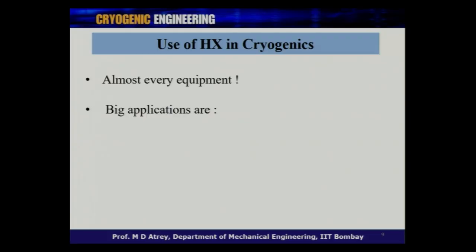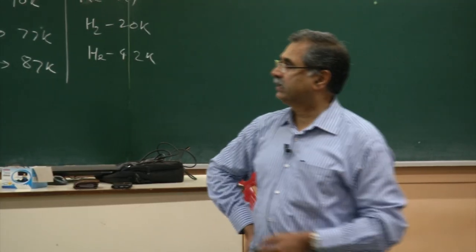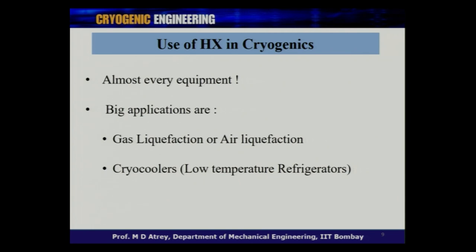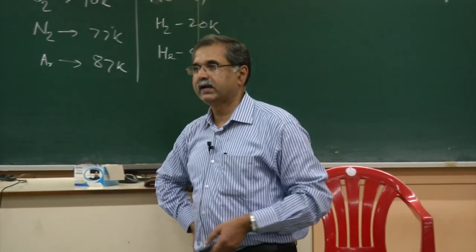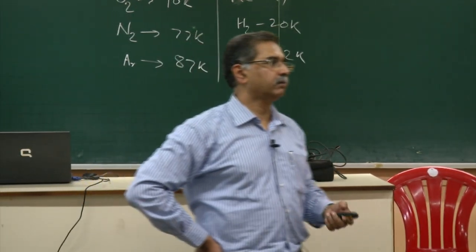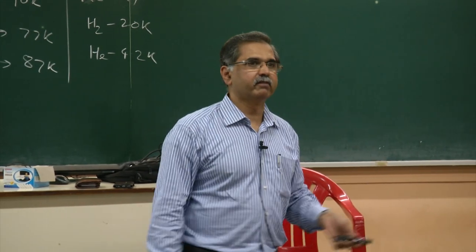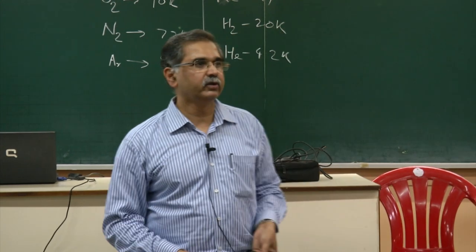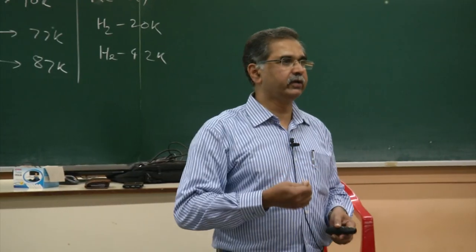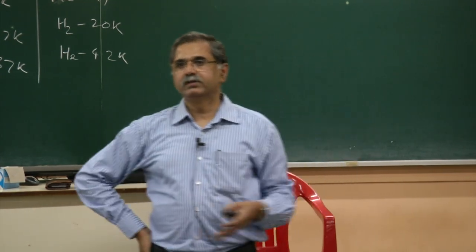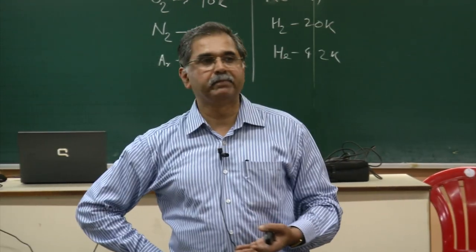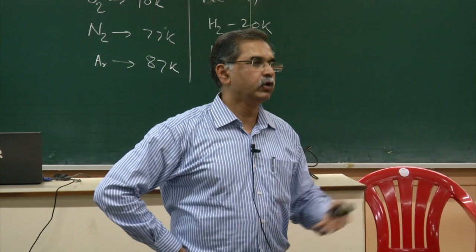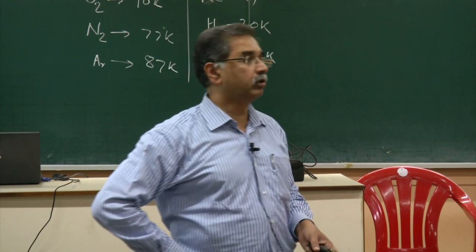Two big applications: first is gas liquefaction or air liquefaction — a major industry, about 80% of the work. The second is cryo coolers, which are refrigerators working at very low temperatures. A domestic refrigerator gives around −10°C, but cryo coolers can come down to 4 Kelvin and work in a closed cycle, just like a domestic refrigerator. You can even have cryo coolers working at 1 Kelvin, 0.5 Kelvin, or 10 millikelvin — one such cryo cooler can cost 3 to 4 crores.